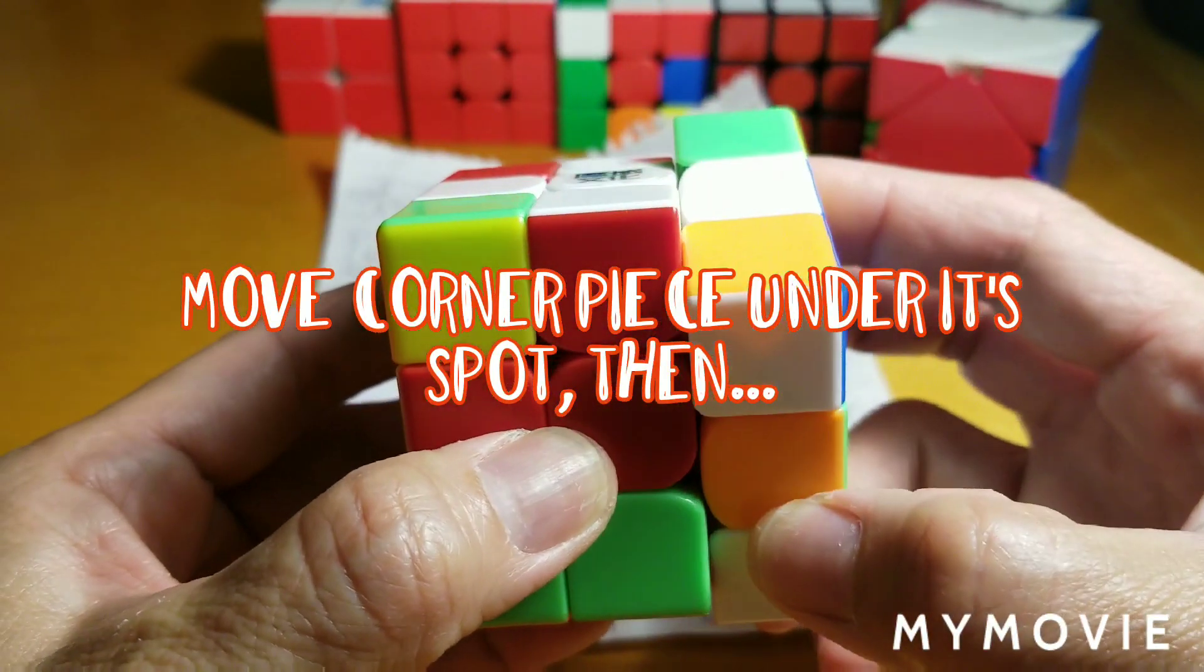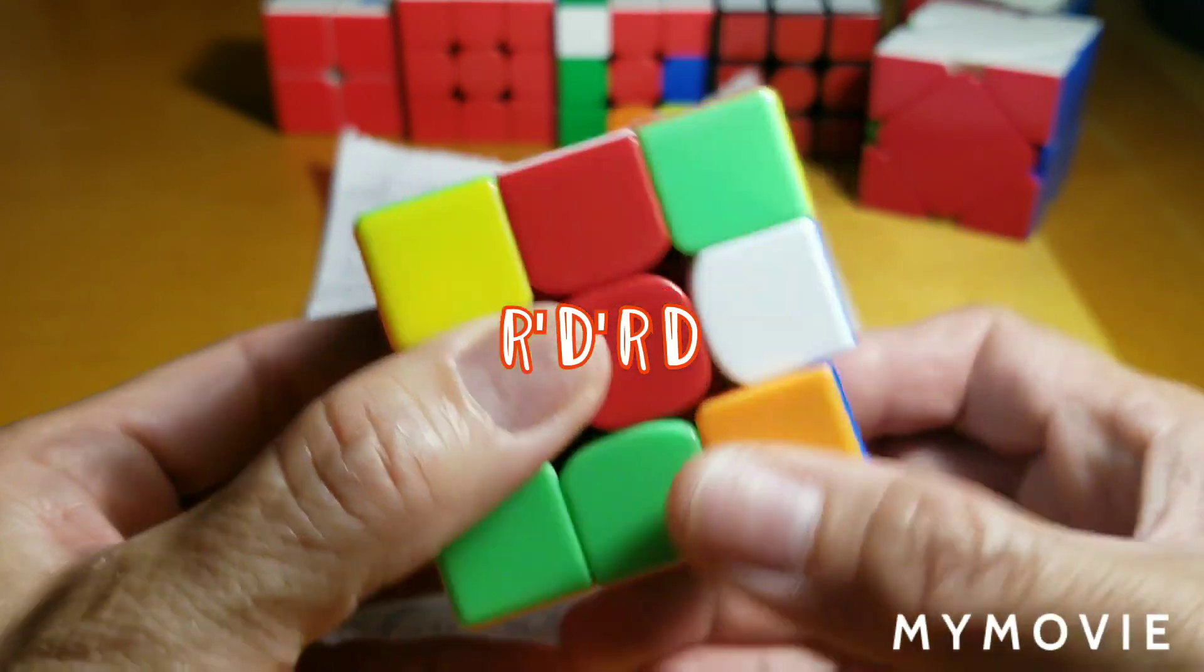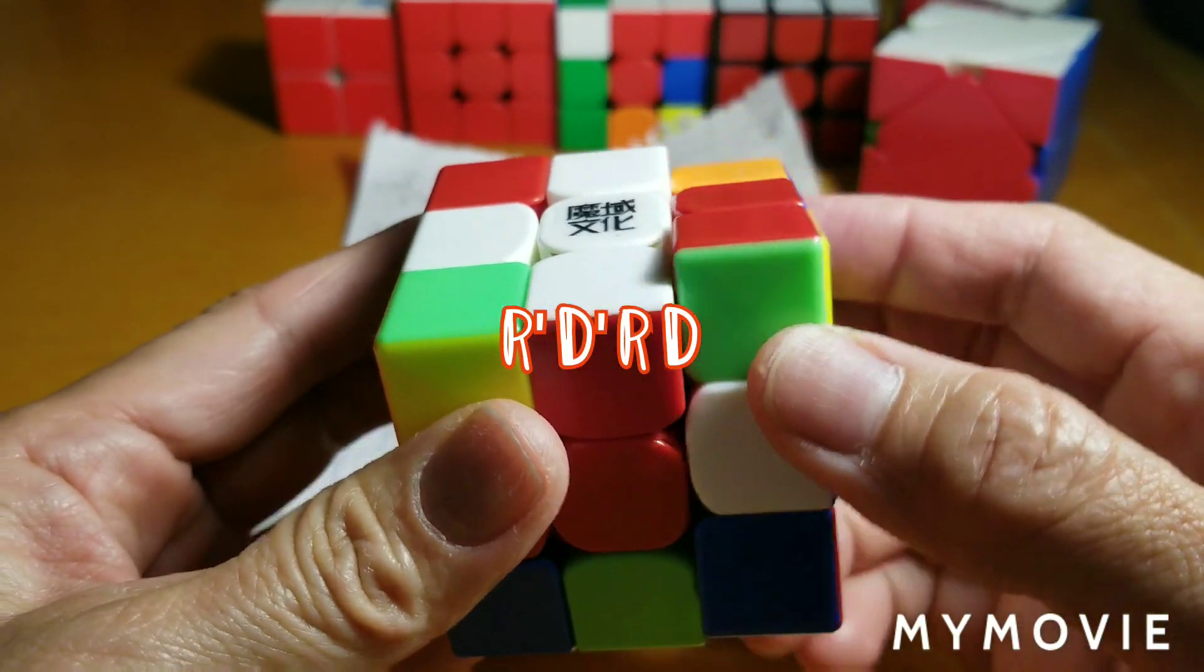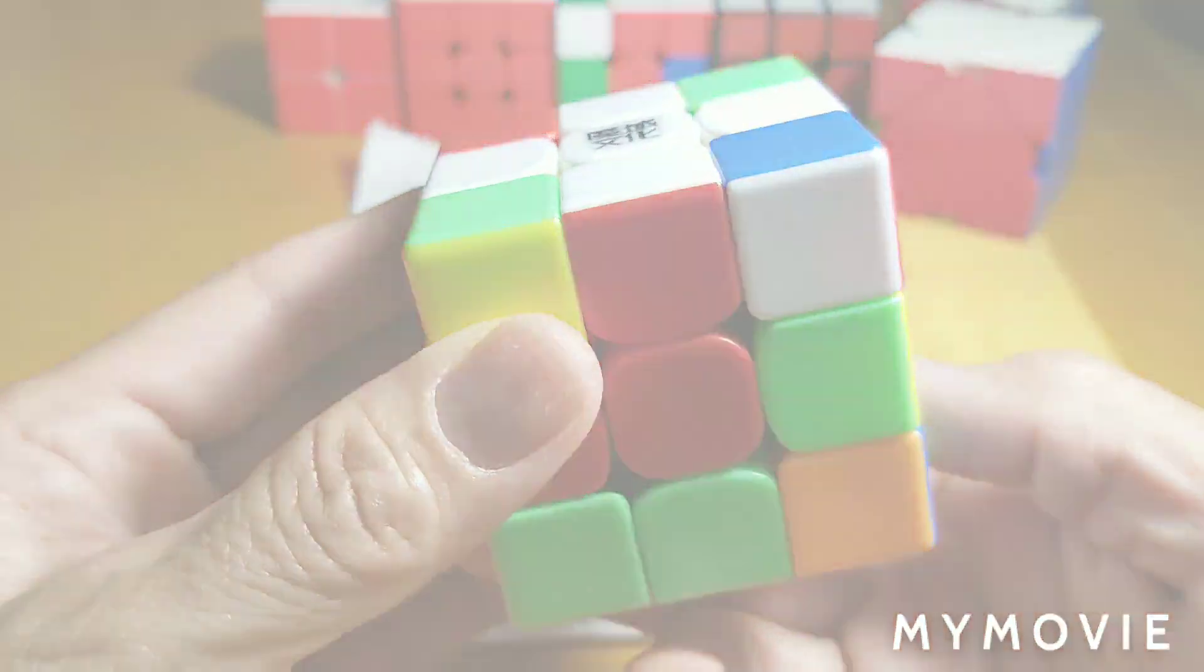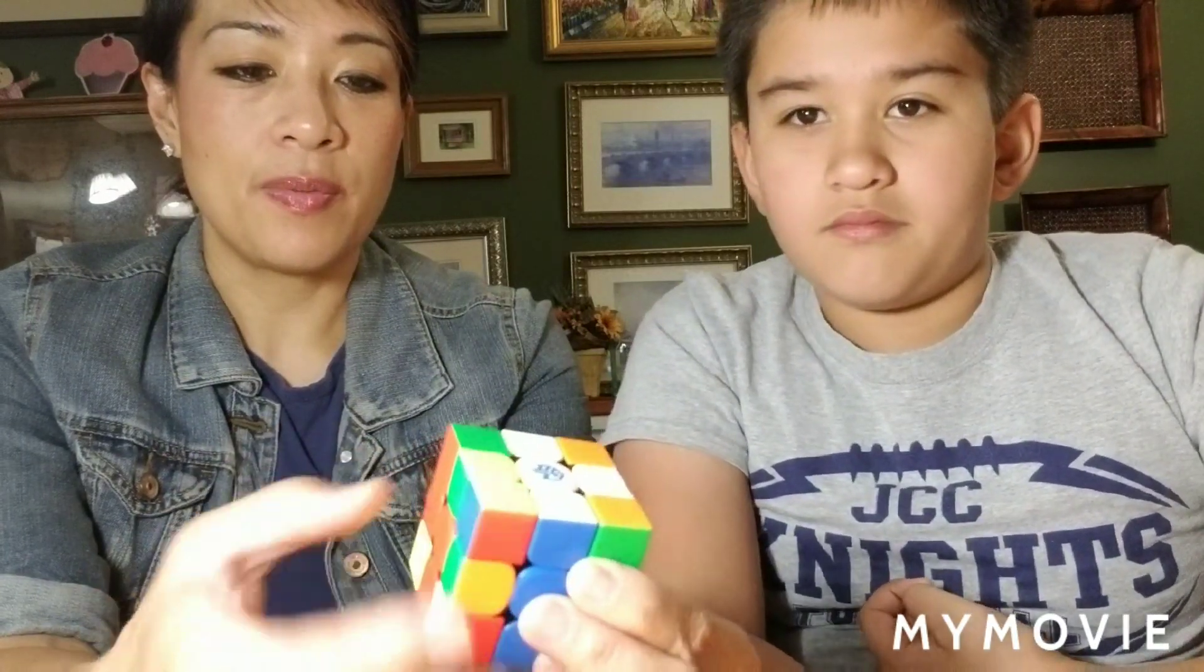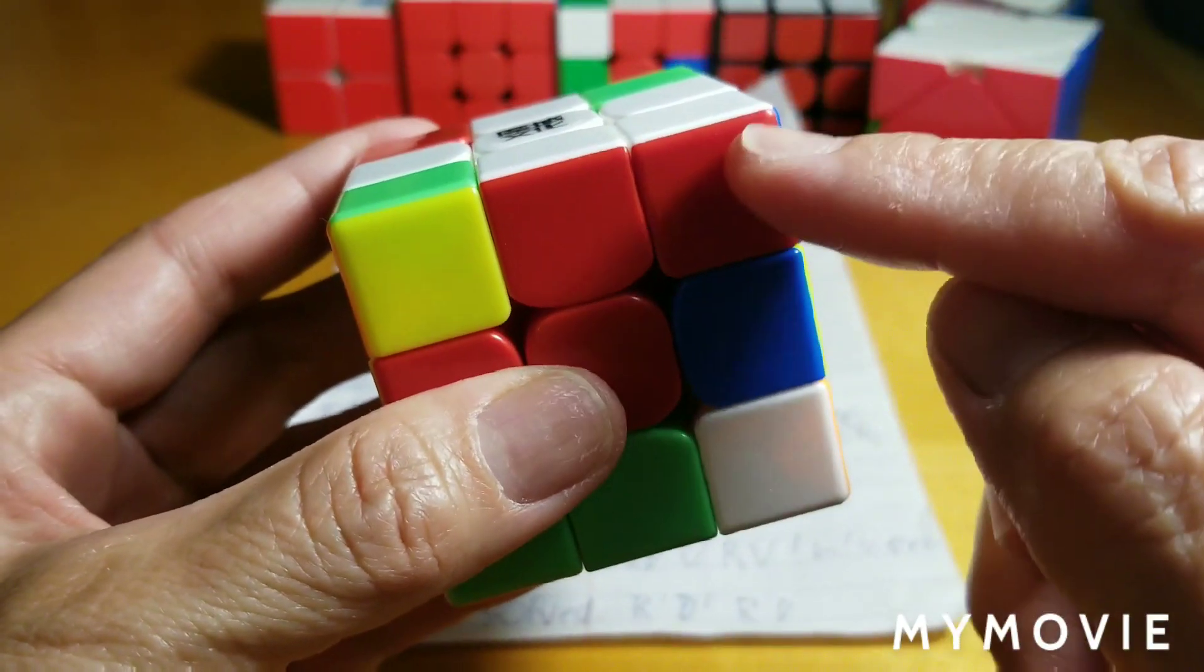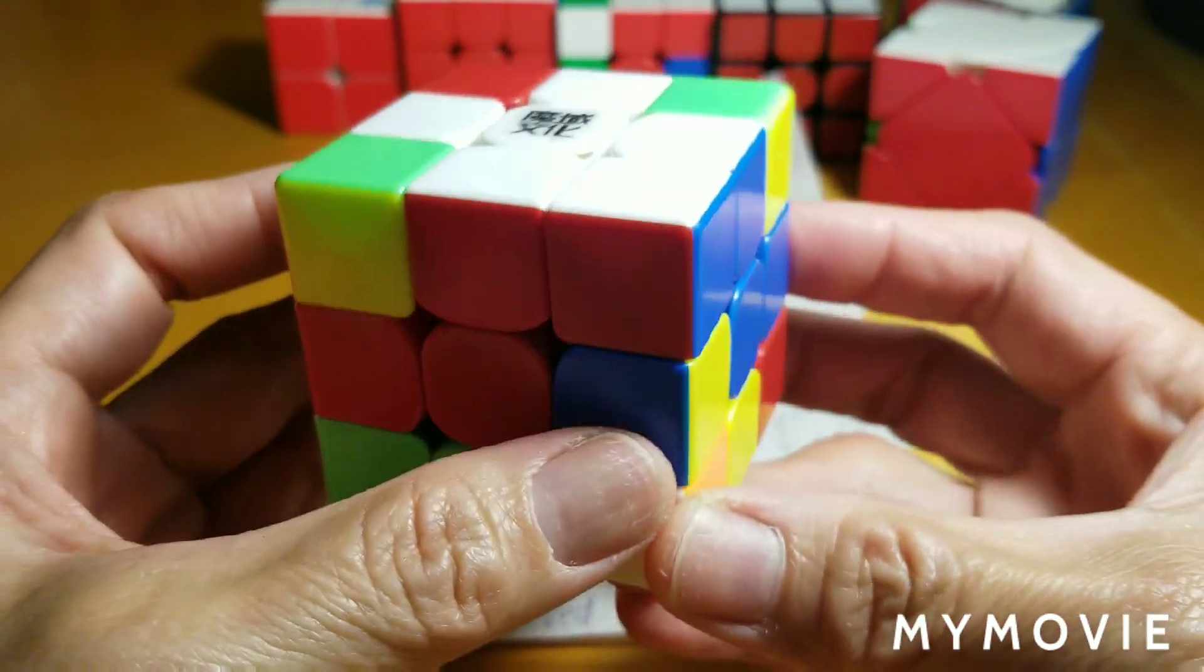Do R prime. R prime. D prime. D. Is that right? D prime. R. R. D. R prime. D prime. R. D. R prime. D prime. R. D. R prime. R. Hey, look! There it is! It's right there! Now this slot is solved! Yay! I like that!